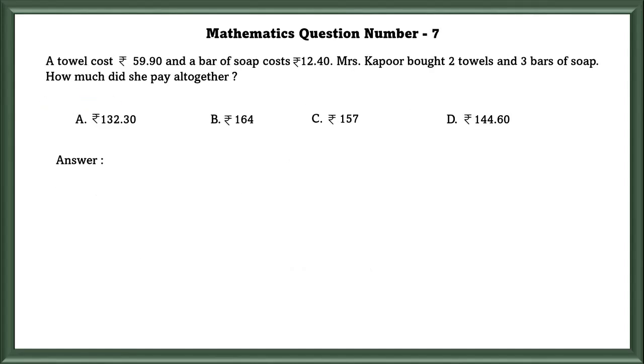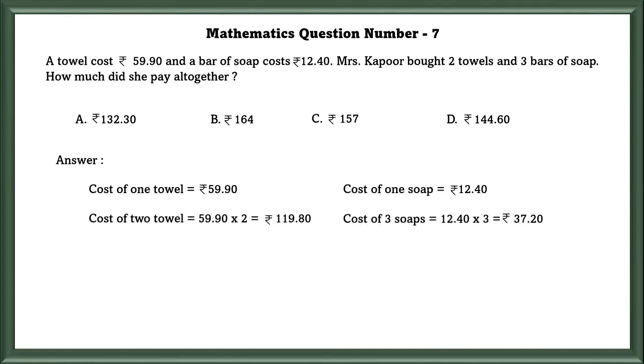Mathematics Question Number 7: A towel costs 59 rupees 90 paise and a bar of soap costs 12 rupees 40 paise. Mr. Kapoor bought 2 towels and 3 bars of soap. How much did she pay altogether? We have to calculate how many for 2 towels and then calculate how many for 3 soaps. And if we calculate that and add that, we will get 157 rupees.